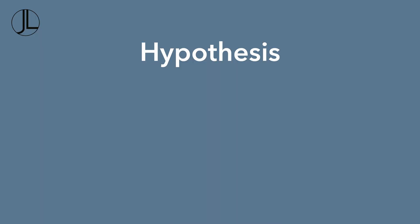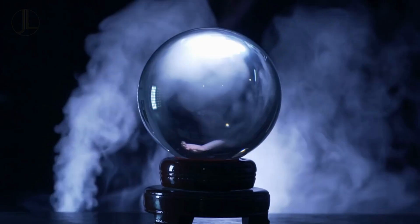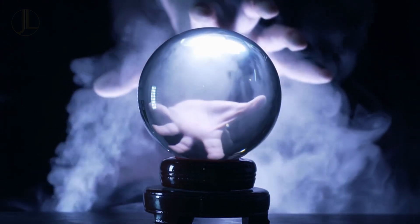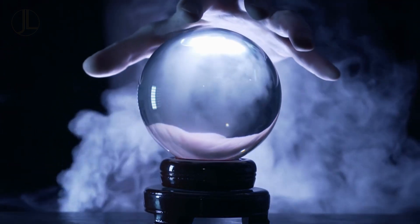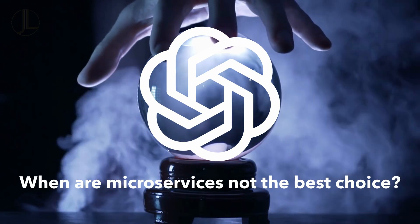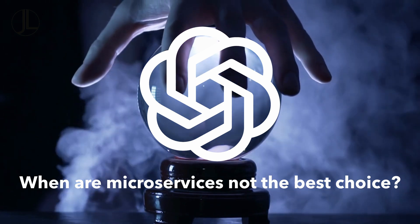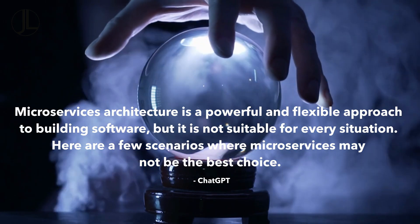So my hypothesis is there is no strong use case for microservices beyond APIs and technical integration. I decided to test my hypothesis with a digital oracle — the all-powerful OpenAI ChatGPT — by asking the question: when are microservices not the best choice? It responded with a statement followed by 5 points.